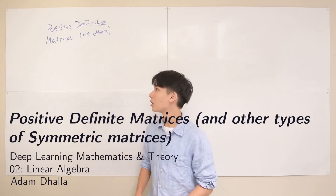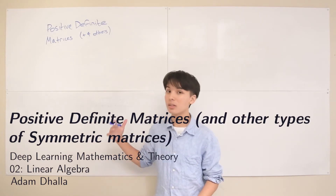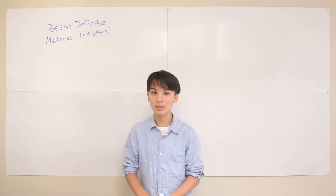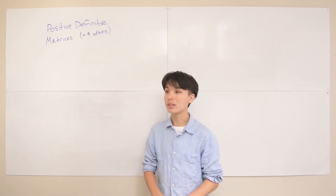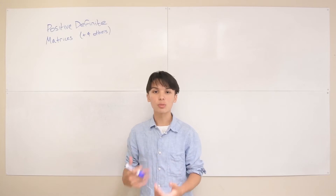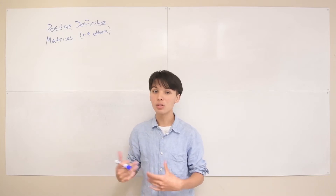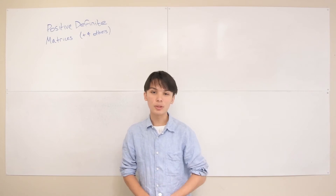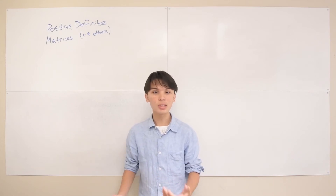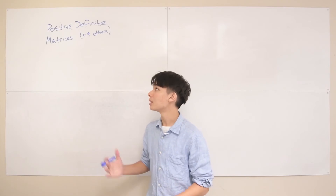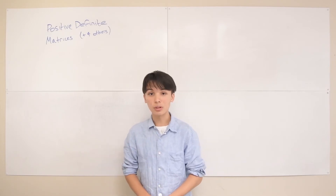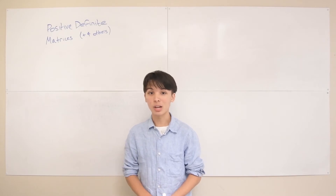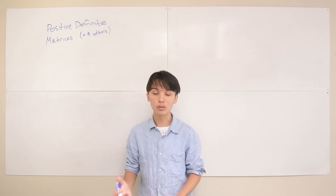Hi, in this lecture I'm going to be talking about how we can classify symmetric matrices into five distinct classes, the most important of which being the positive definite matrix. We'll cover the different properties of each of these classes and why it's important to know them. This goes to chapter 2.7 of the Deep Learning textbook. There isn't much text on these five types in the book, but I want to include it here because it will make future topics a lot easier to understand and more intuitive.